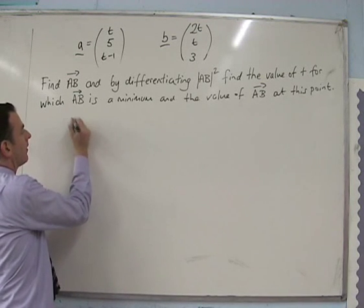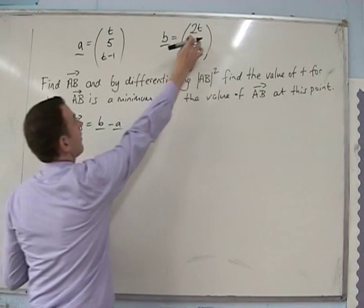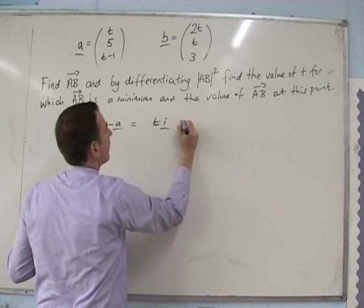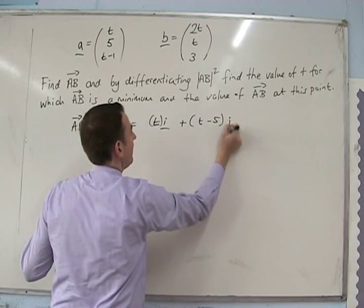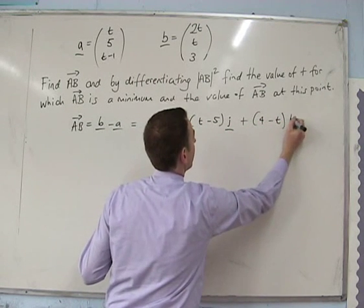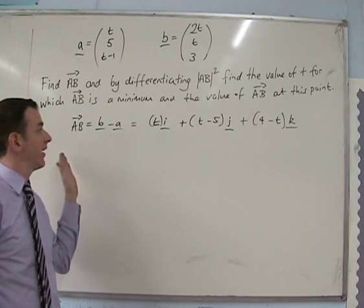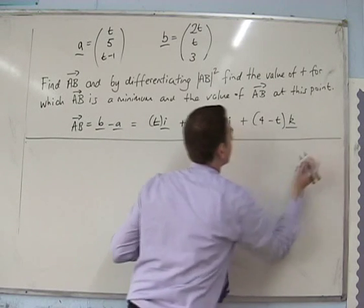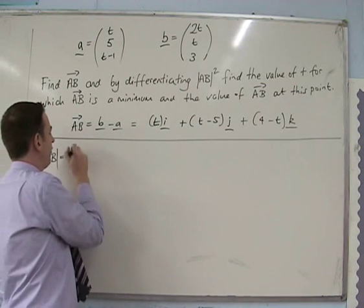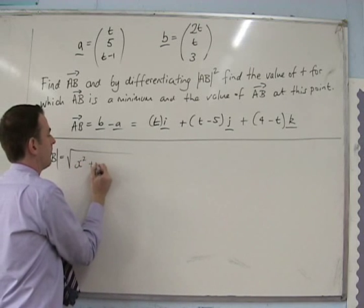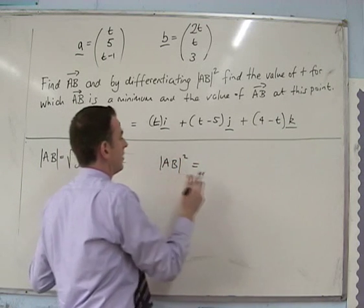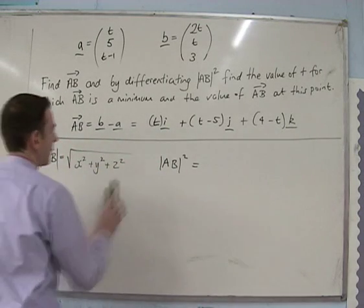First of all, vector AB is always B minus A. So: 2t take away t gives t i's; t take away 5 gives (t minus 5) j's; and 3 take away (t minus 1) is going to be (4 minus t) k's. So that is the vector to get from A to B.